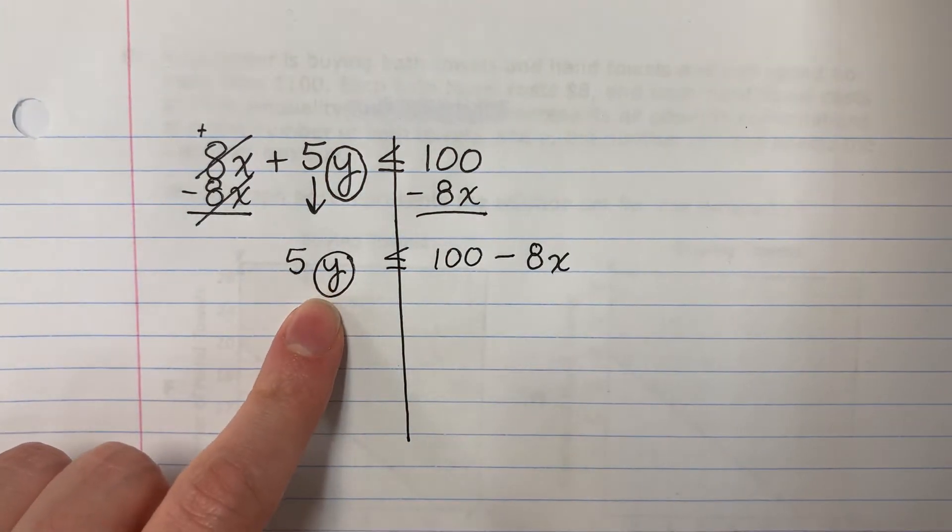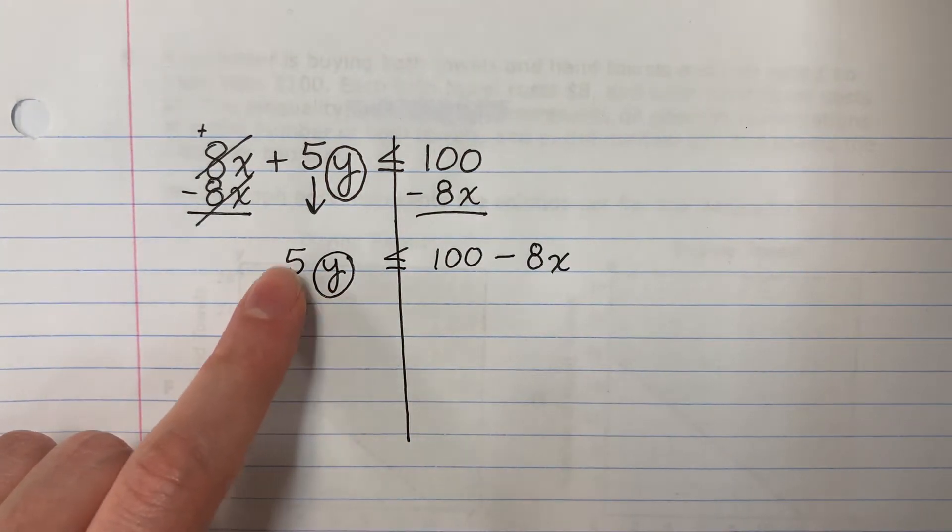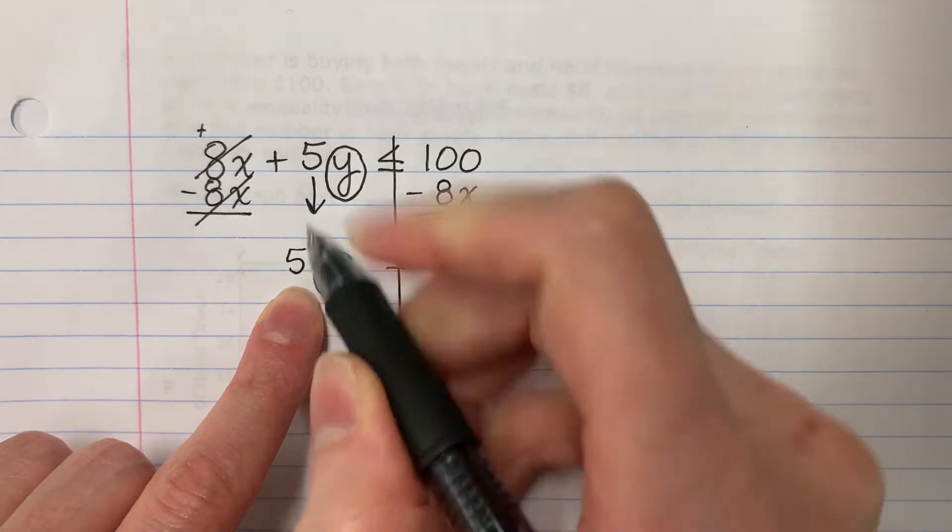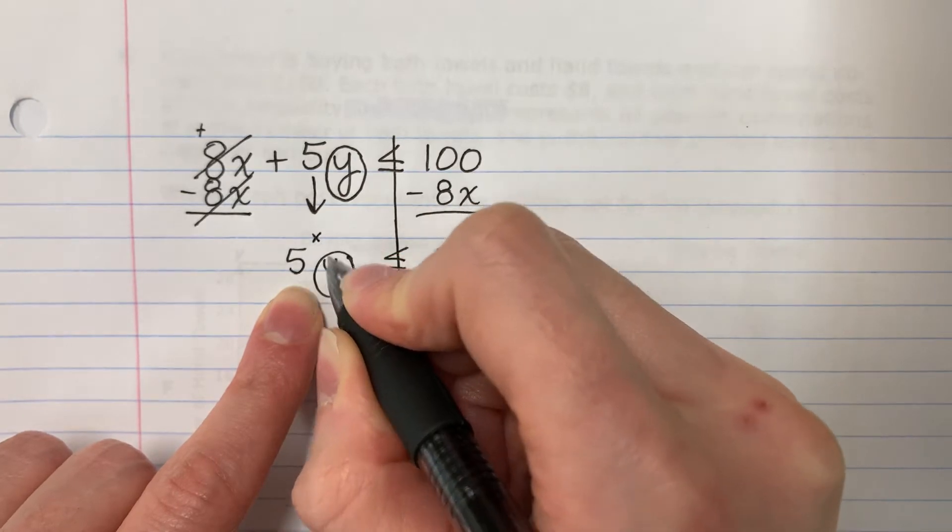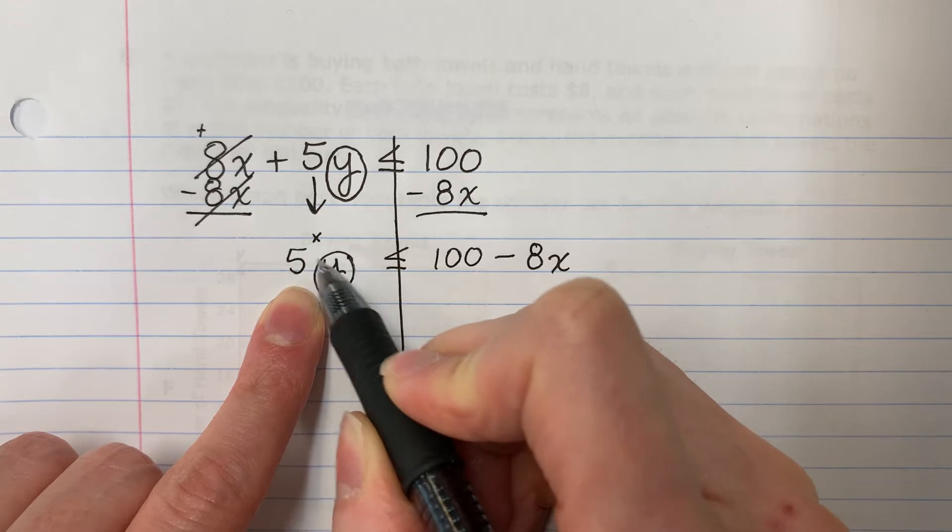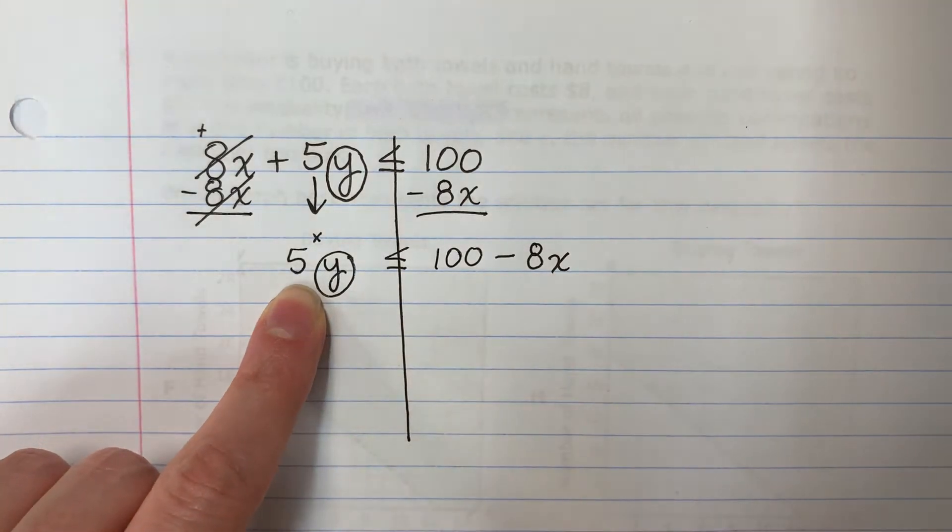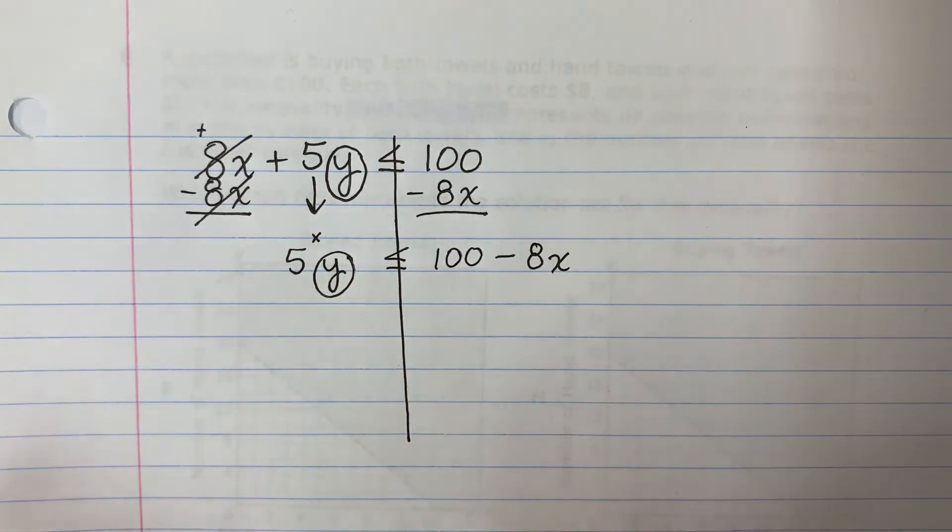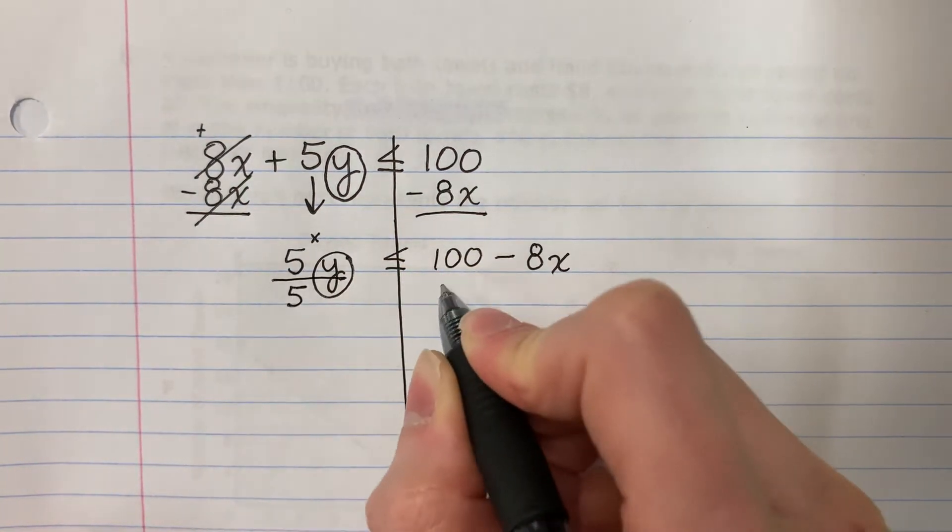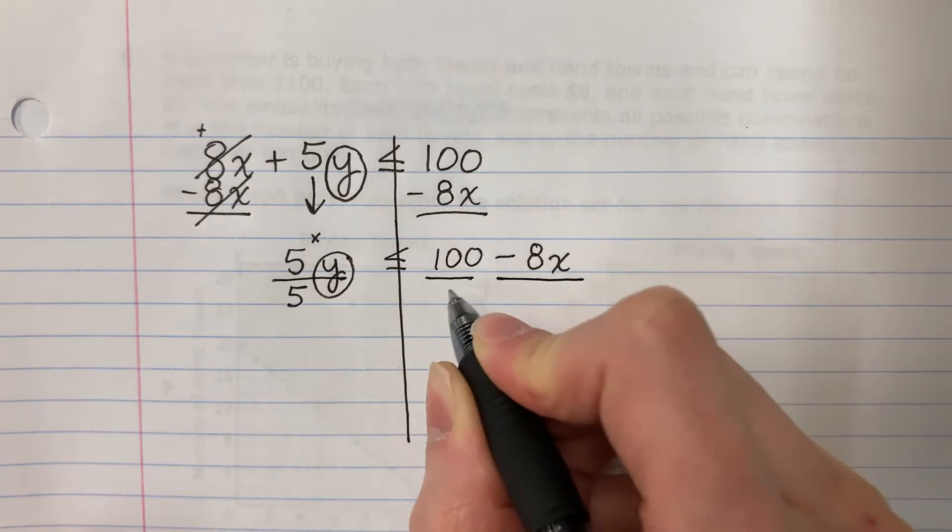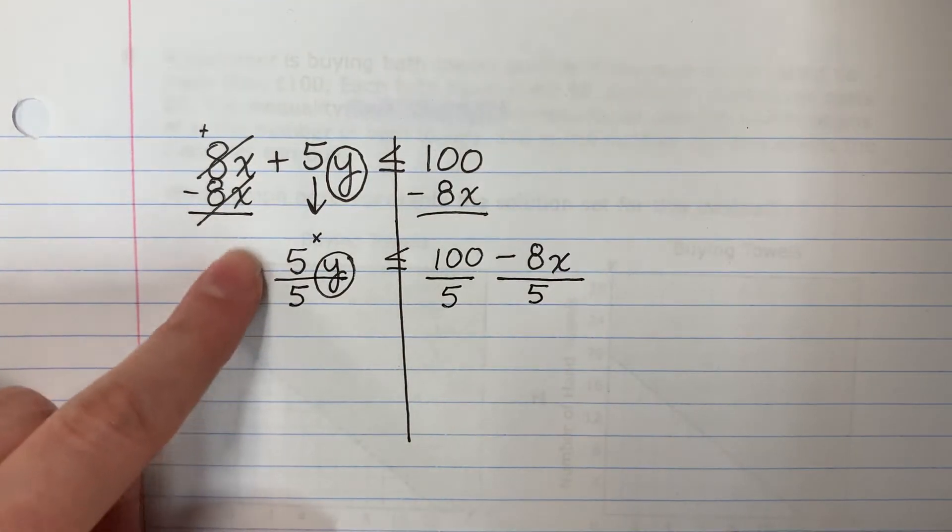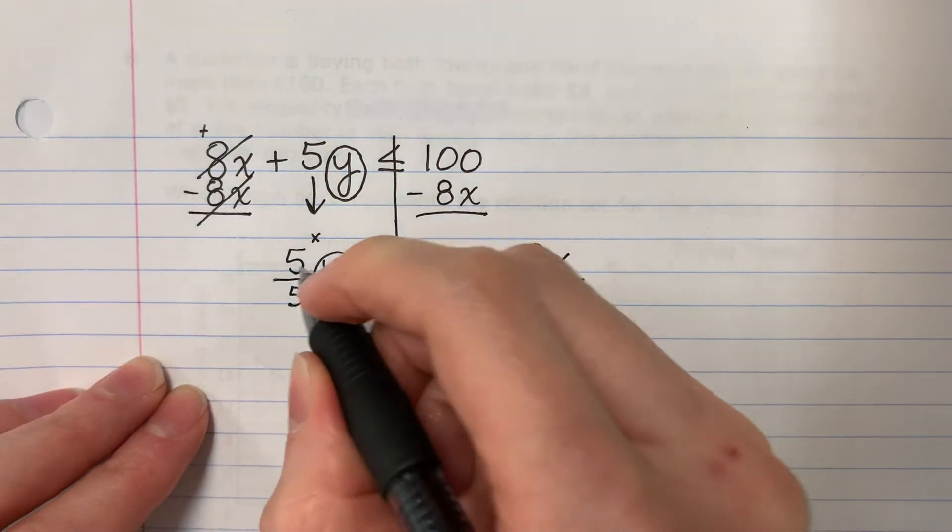I want the y alone. But I have 5. This is 5 times y. If there's no sign in the middle, it's multiply. The opposite of multiply is divide. So divided by 5. For each one, divided by 5. 5 divided by 5 is 1. Cancels. So y.